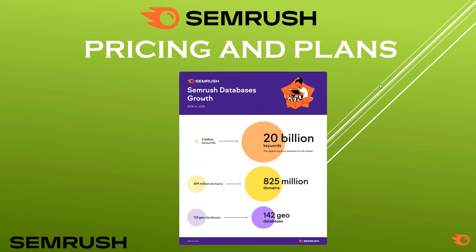In 2018 there were only 419 million domains in the SEMrush domain database, but in 2020 this has doubled to 825 million domains. The geo databases also expanded from 113 countries in 2018 to 142 geo databases in 2020, showing the significant improvement SEMrush has made.